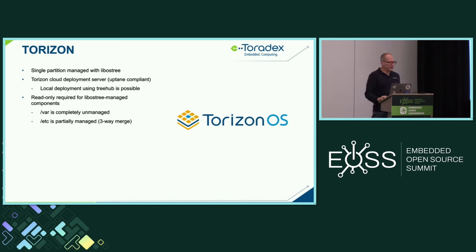Now we get into the real numbers. This is the full image update — a 350 megabyte image with only a one-byte change. All updaters have compression built in, which is why you're not seeing 350 megs downloaded. Mender, RAUC, and SWUpdate are all roughly the same — they're using very similar compression algorithms. This is where Torizon with OSTree has quite a significant advantage. Since there's only one file plus metadata, we're only downloading 12 megabytes as opposed to about 130 megabytes for the others.